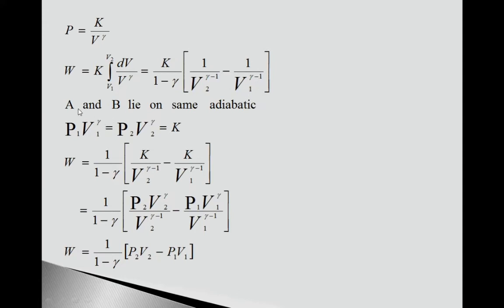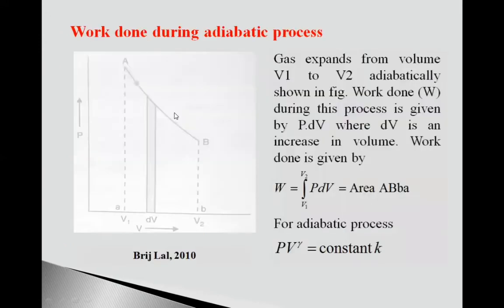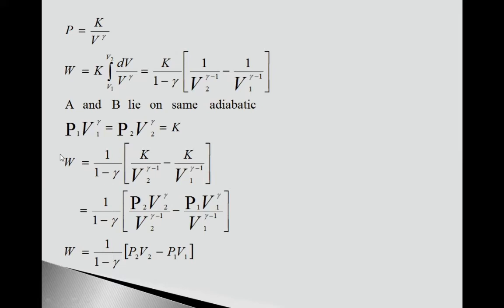Now you know A and B lie on same adiabatic. Here A and B are on same adiabatic. So equations for this: P1V1^γ equals P2V2^γ equals K.